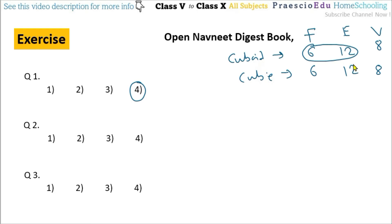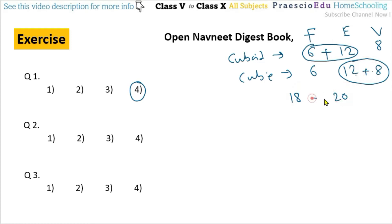For the cube, the sum of faces and edges is 6 plus 12 = 18. The sum of edges and vertices is 12 plus 8 = 20. The difference is 2. Since the question asks about the cuboid's sum compared to the cube's sum, it is less by 2, so option number 1 is the correct one.